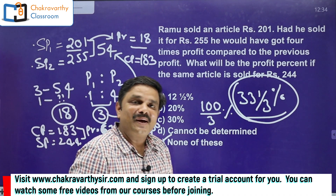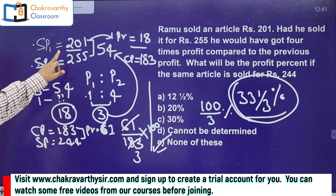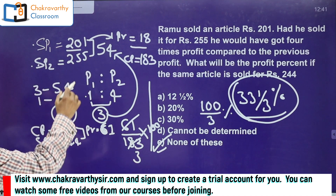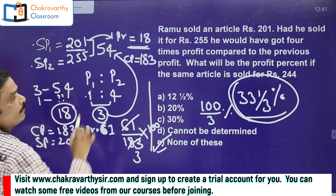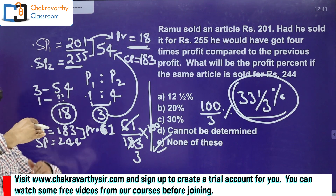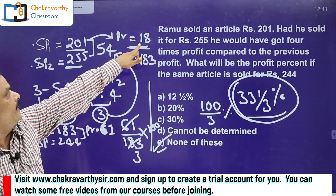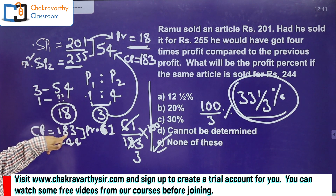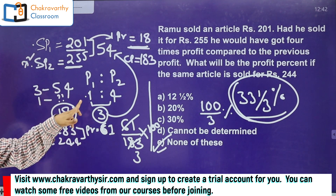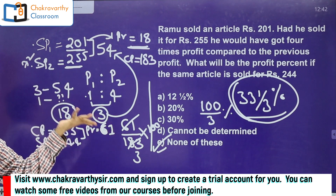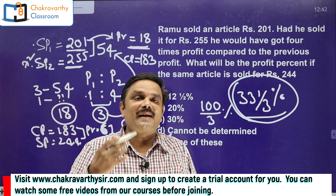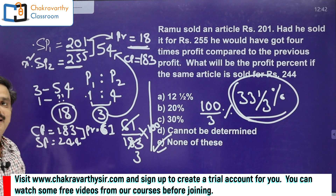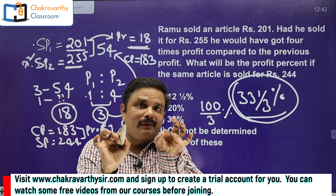Some students may ask why not use the second selling price to verify. You can use that too. When he sold for 201, profit was 18 rupees. At 255 rupees, profit should be four times that — 18 into 4 equals 72. So 255 minus 72 also gives cost price 183, confirming the same answer. You can use either selling price to get the cost price.